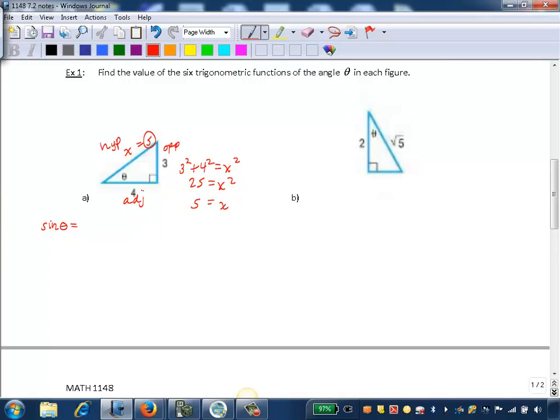For sine, we want the ratio of the opposite to the hypotenuse. So the opposite is 3 and the hypotenuse is 5.